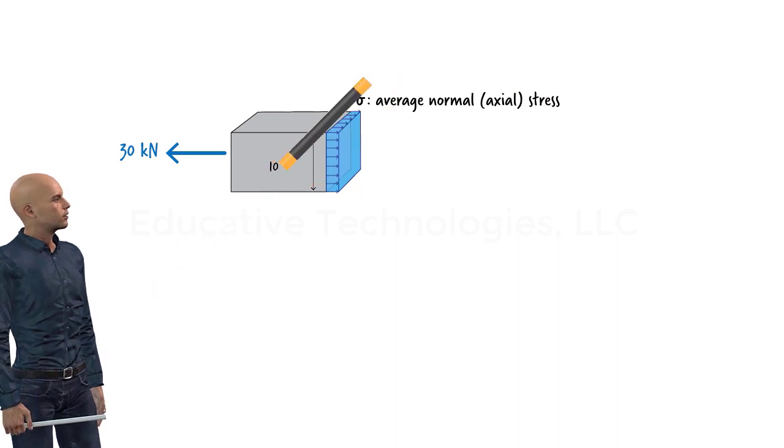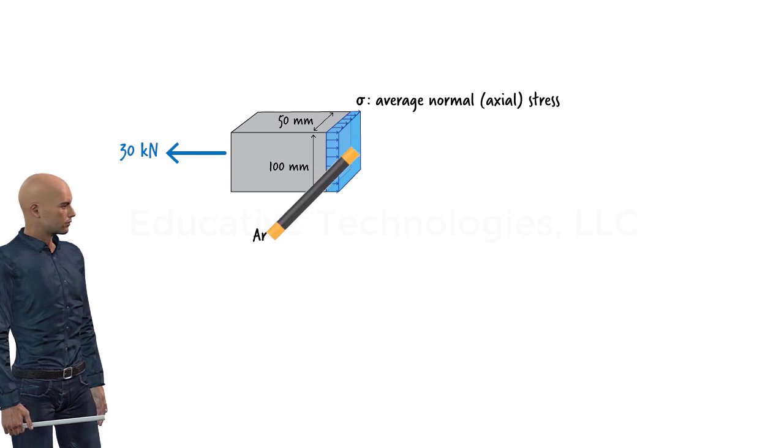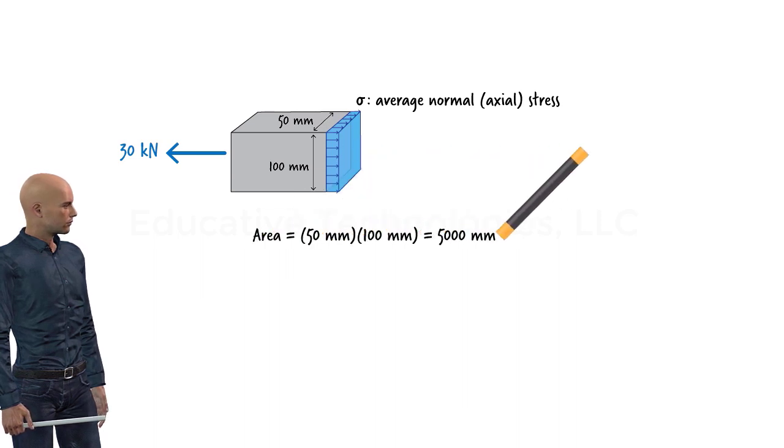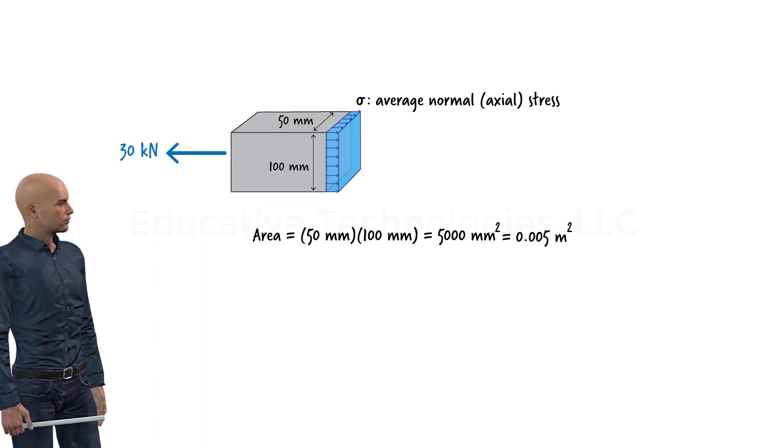Suppose the cross section of the truss member is 100 millimeters by 50 millimeters. Therefore, the area over which sigma exists equals 5000 square millimeters or 0.005 meters squared. Since the static equilibrium of the truss member segment must be maintained, we can write the equilibrium equation.